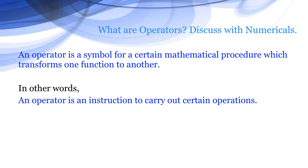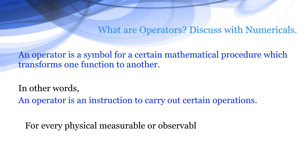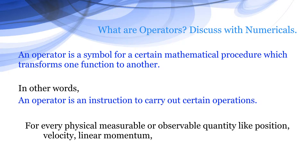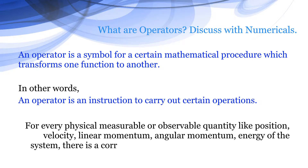For every physical measurable or observable quantity like position, velocity, linear momentum, angular momentum, or energy of the system, there is a corresponding operator in quantum mechanics.